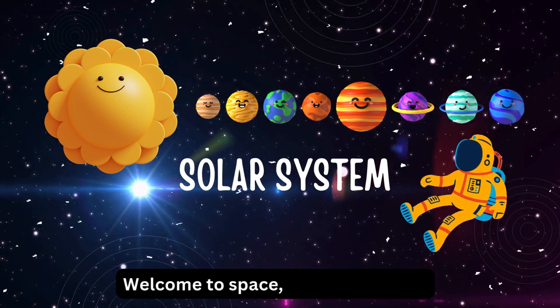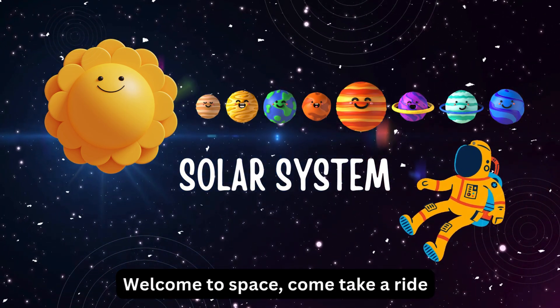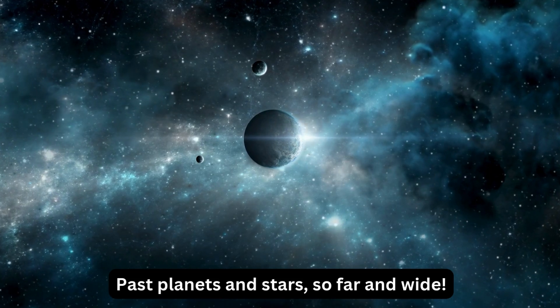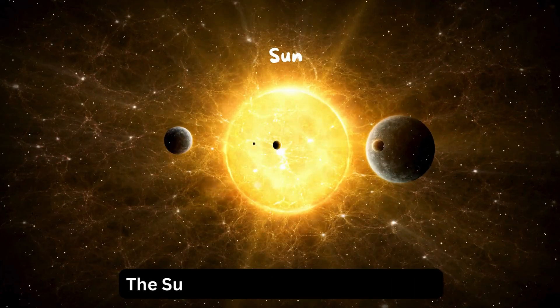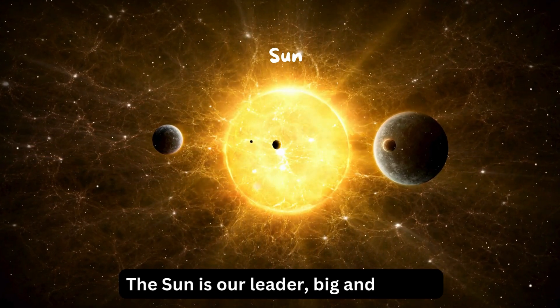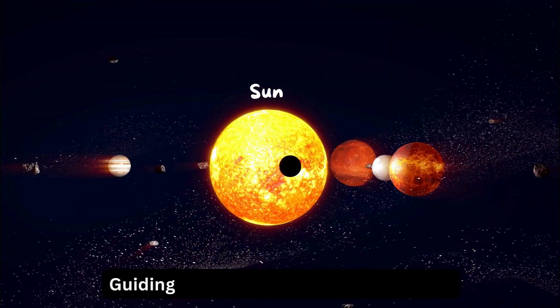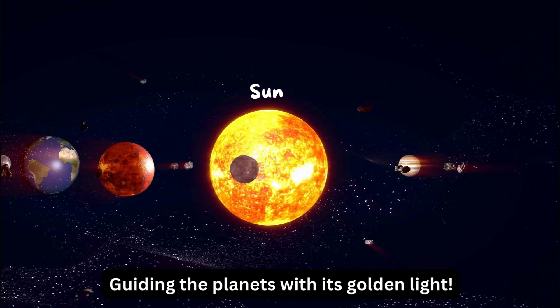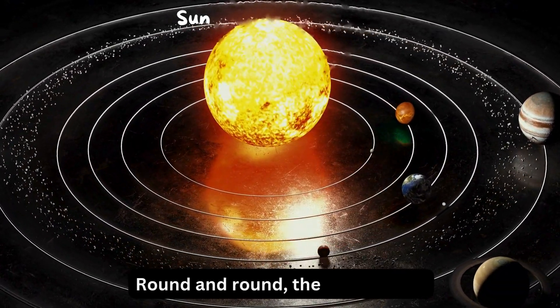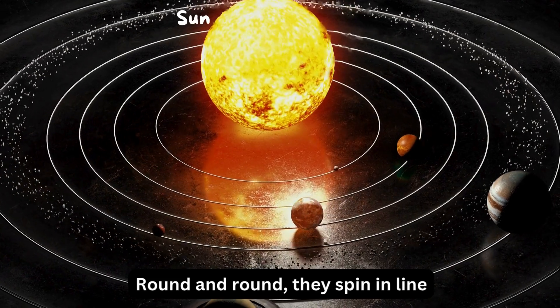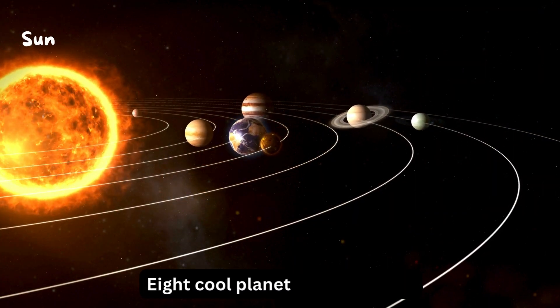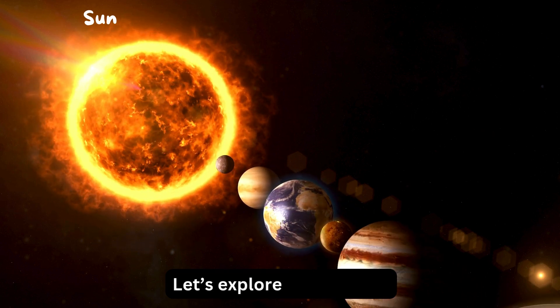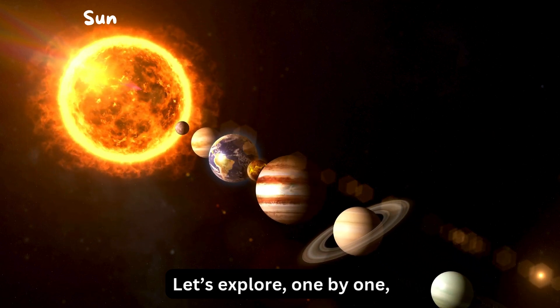Welcome to space, come take a ride. Past planets and stars, so far and wide. The sun is our leader, big and bright, guiding the planets with its golden light. Round and round they spin in line, eight cool planets, each so fine. Let's explore, one by one.